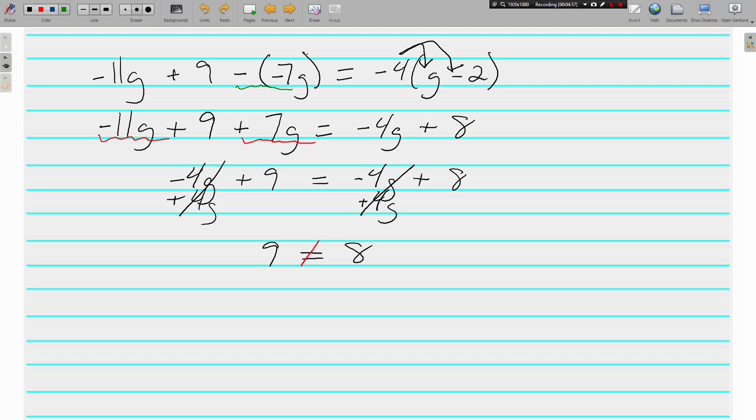The last one was an identity. This equation has no solution. There's not a special name for it that I know of, but the point is there is no number that we could substitute in for g. There's nothing we could put in up there that would make the left side equal the right side. There is no solution. 9 does not equal 8. There's no solution for this problem.